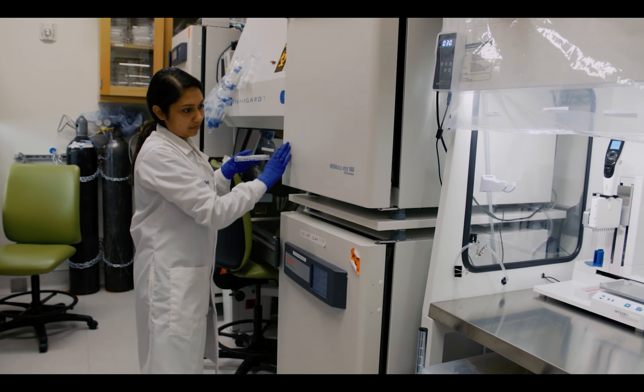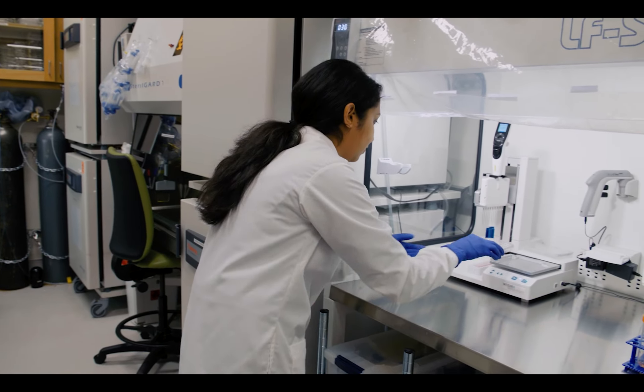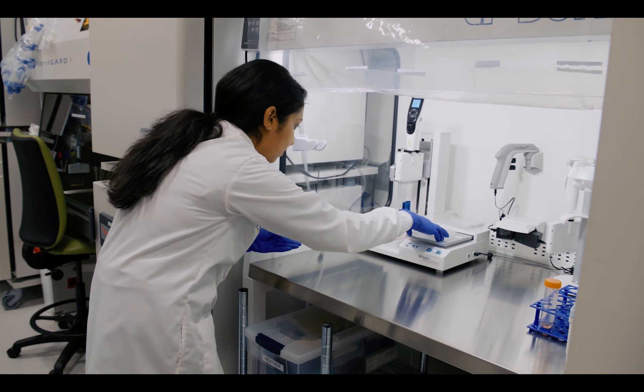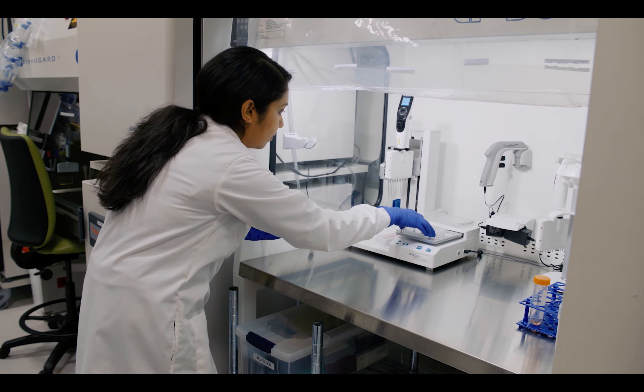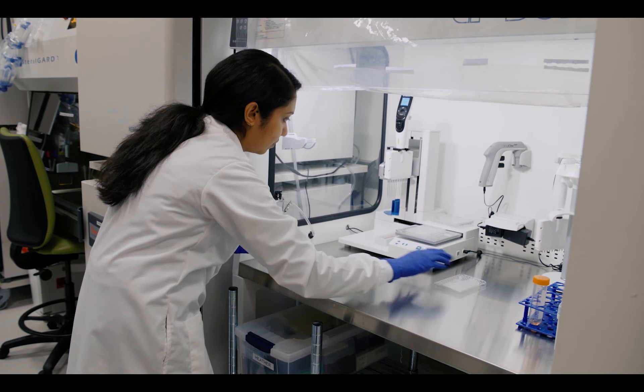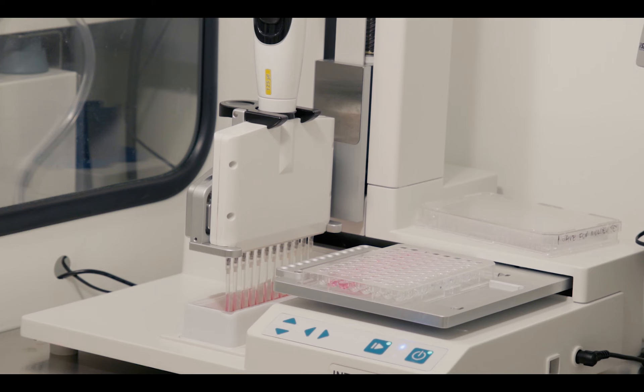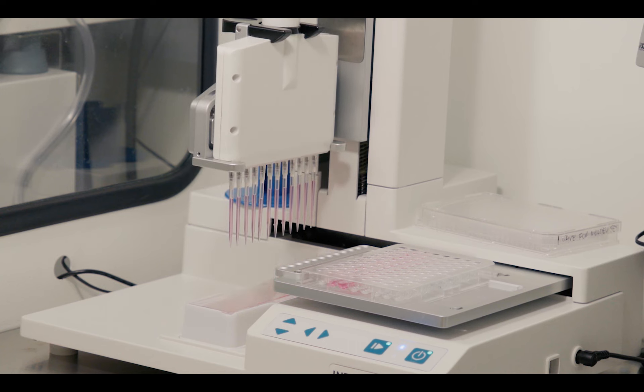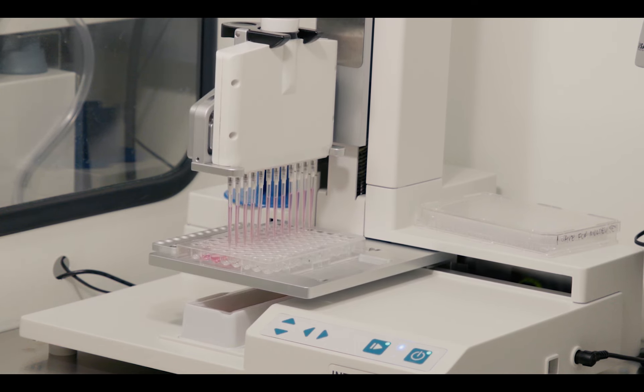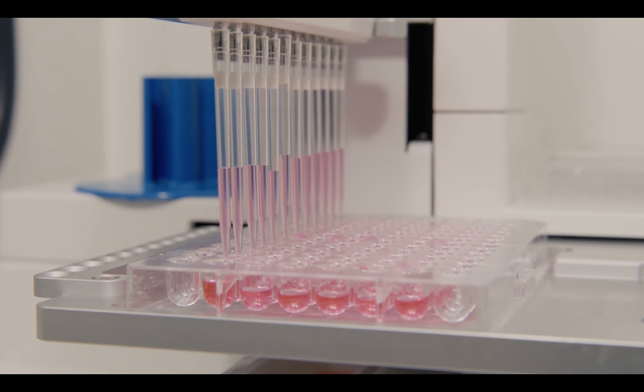One of the powerful things that we can do with retinal organoids is to introduce patient-specific mutations. And this is something that's really been made possible over the past five years by new gene editing techniques. Wallen's lab uses the CRISPR gene editing technique to create retinas with the exact mutations found in people with eye disease, so he can study how they develop and what treatments might work on each mutation.